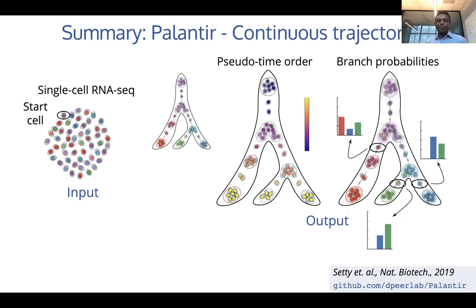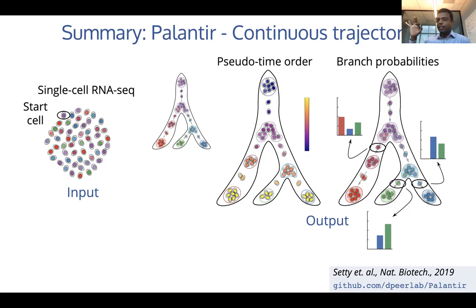In terms of the start cell, the way to choose is based on expression of some known markers. Based on prior biological knowledge, we know what set of genes a start cell has to express. It doesn't have to be exact — just an approximation of where the start cell is in this bunch of cells, and the algorithm can correct for the right start.